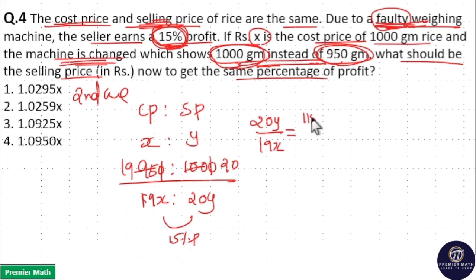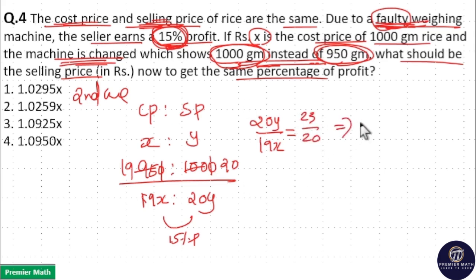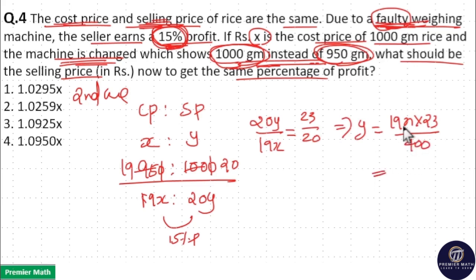15% profit means 115 by 100, that is 115/100, which simplifies to 23 by 20. So this ratio is equal to 23/20. From this, Y is equal to 19X multiplied by 23, divided by 20 multiplied by 20. Working through the arithmetic: 9×3 = 27, 9×2 = 18 plus 3 = 21, 21 plus 2 = 23, 2×1 plus 2 = 4.